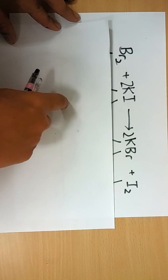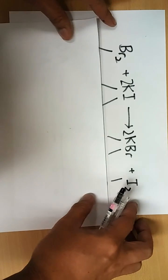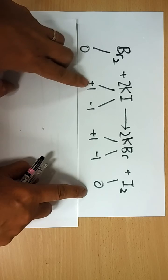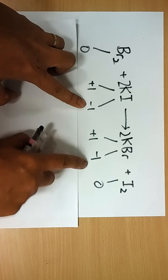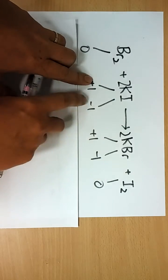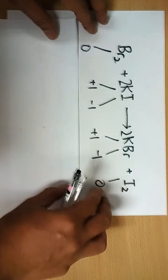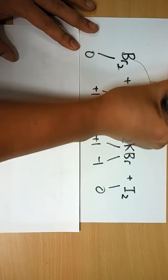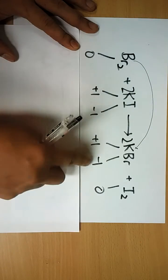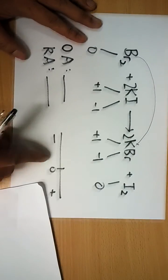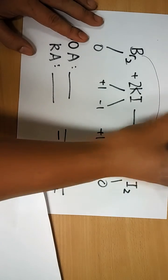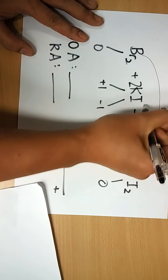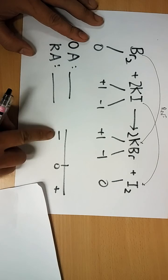Here is the next problem for you to try — pause and find the OA and RA. The solution: K is plus 1, Br is minus 1, I is minus 1. Br2 starts as an element at 0 and becomes minus 1 — that is reduction. I- goes from minus 1 to 0 — that is oxidation.